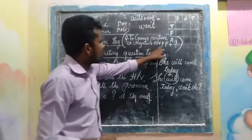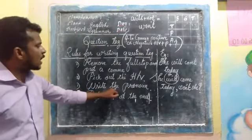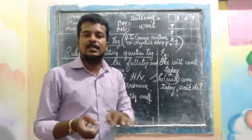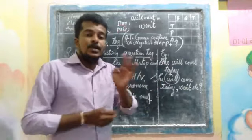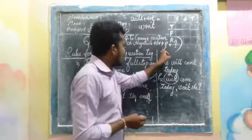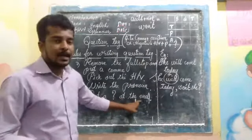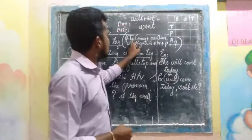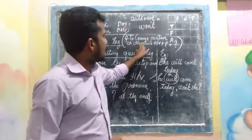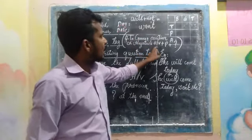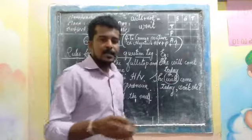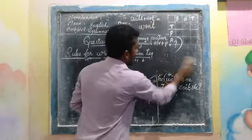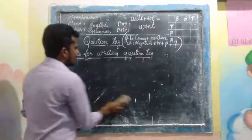The third rule: write the pronoun of the subject of the sentence. In most cases the pronoun is already given; if a noun is given, use the correct pronoun according to that noun. Finally, put a question mark at the end. So: Question tag = comma + positive/negative helping word + pronoun of the subject + question mark. Let us go through a few more examples.